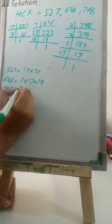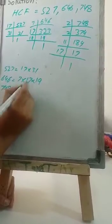748 equals 2 multiplied by 2 multiplied by 187.